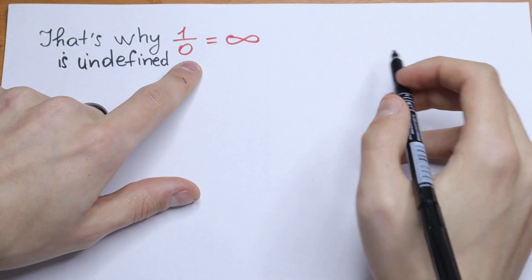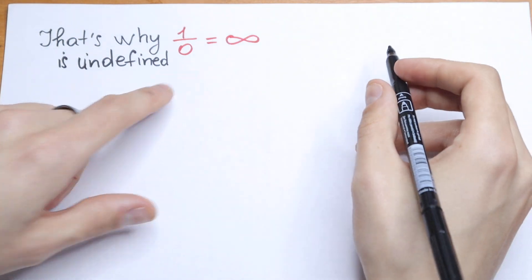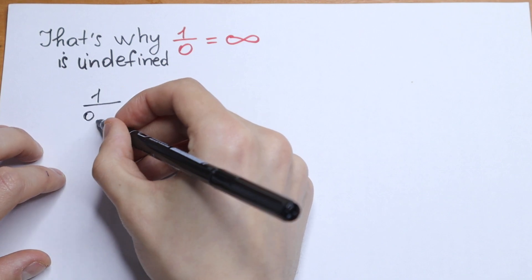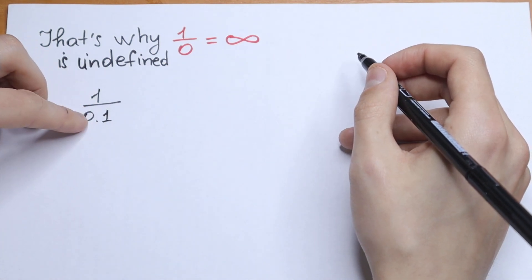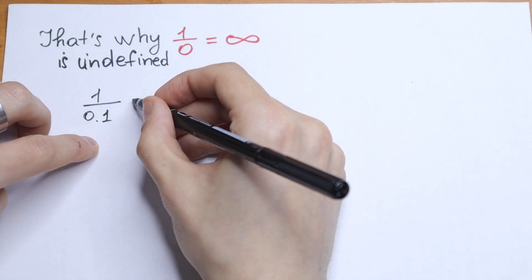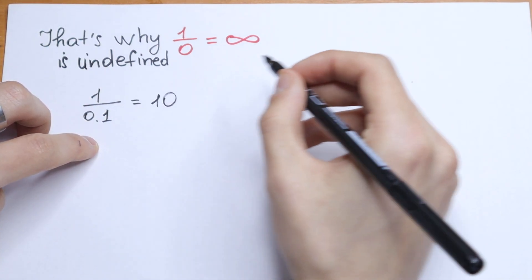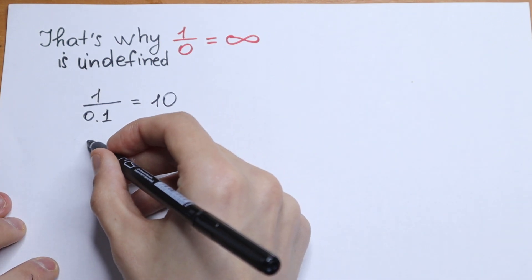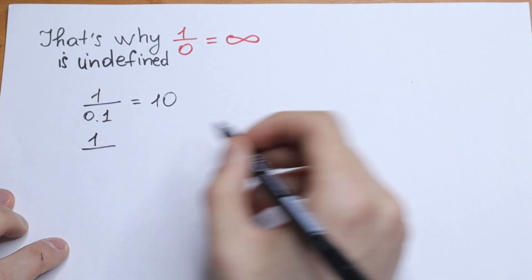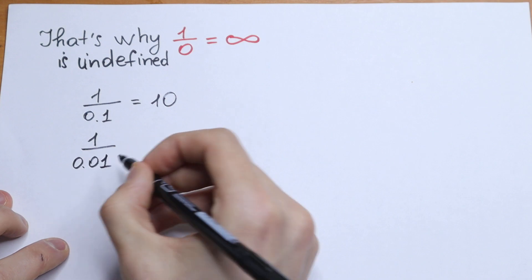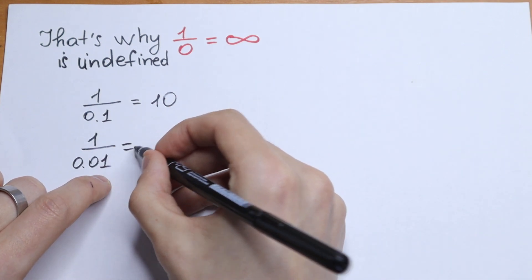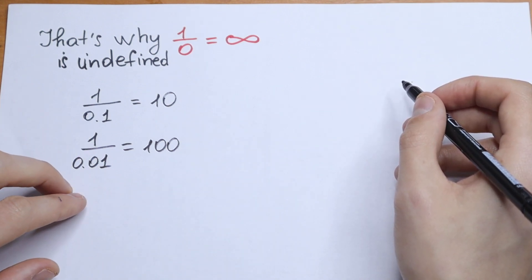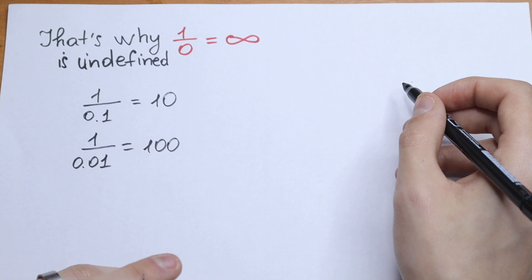Take a look — if we get closer and closer to 0, for example, if we divide 1 by 0.1, what will we have? 1 divided by one tenth, we will have 10 as a result. So let's get closer and closer to 0. If we divide 1 by 0.01, we will have 100. So as you can see, if we get closer and closer to 0, we will get to infinity.